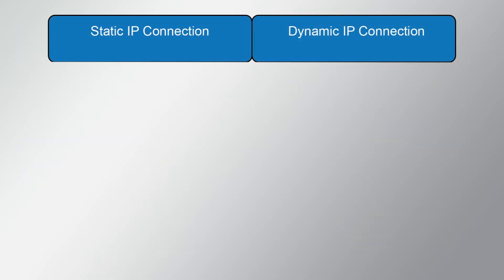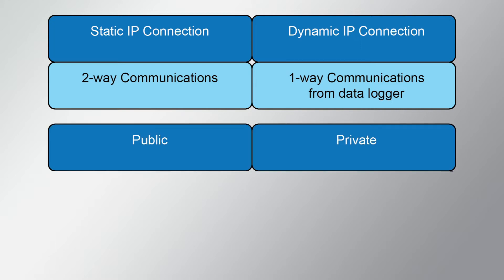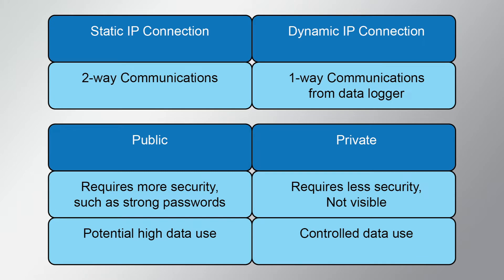To recap: an IP connection may be static or dynamic. A static connection allows two-way communications, while a dynamic connection is only one way from the datalogger. A public connection can be discovered by other users, requiring additional security such as a strong password. A private connection cannot be discovered, so it remains less vulnerable to outside attack. A public connection may experience high data usage if it becomes the target of frequent outside contact, while a dynamic connection will only use data as the datalogger sends information to the cloud or other destination.